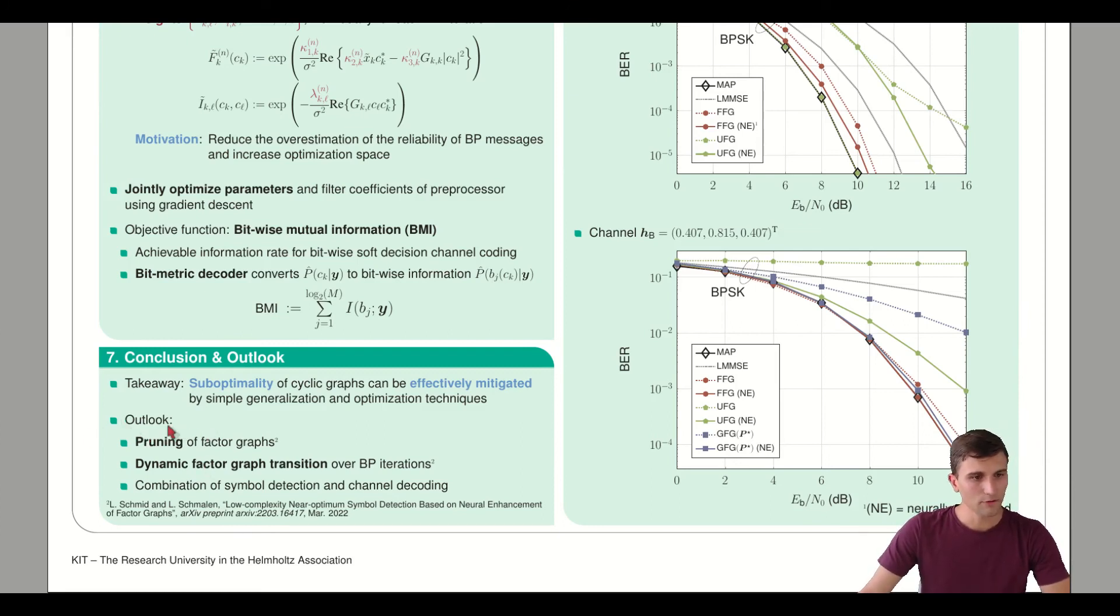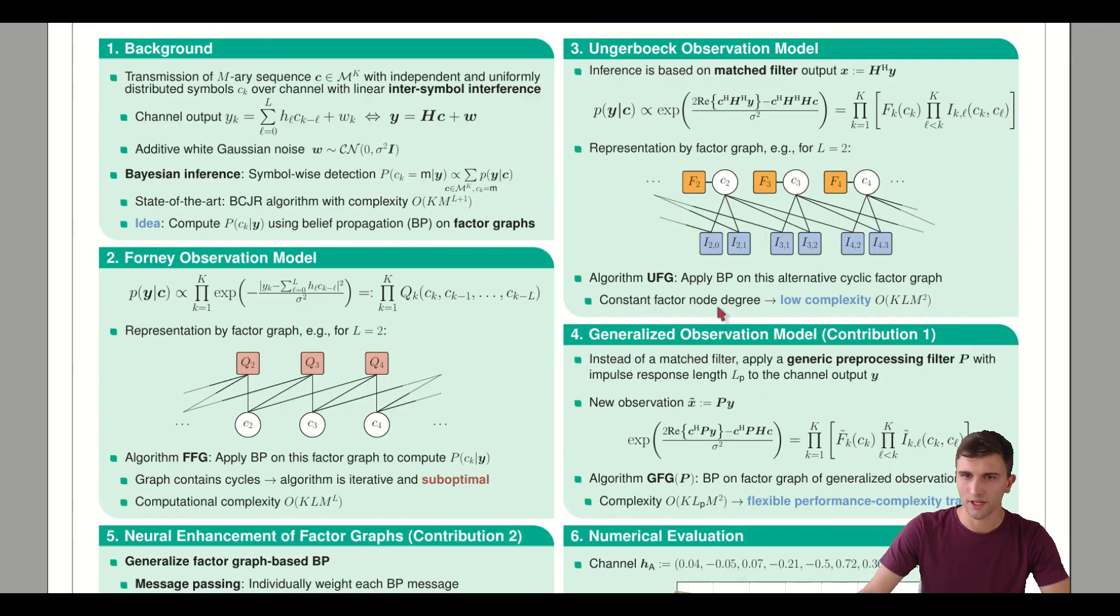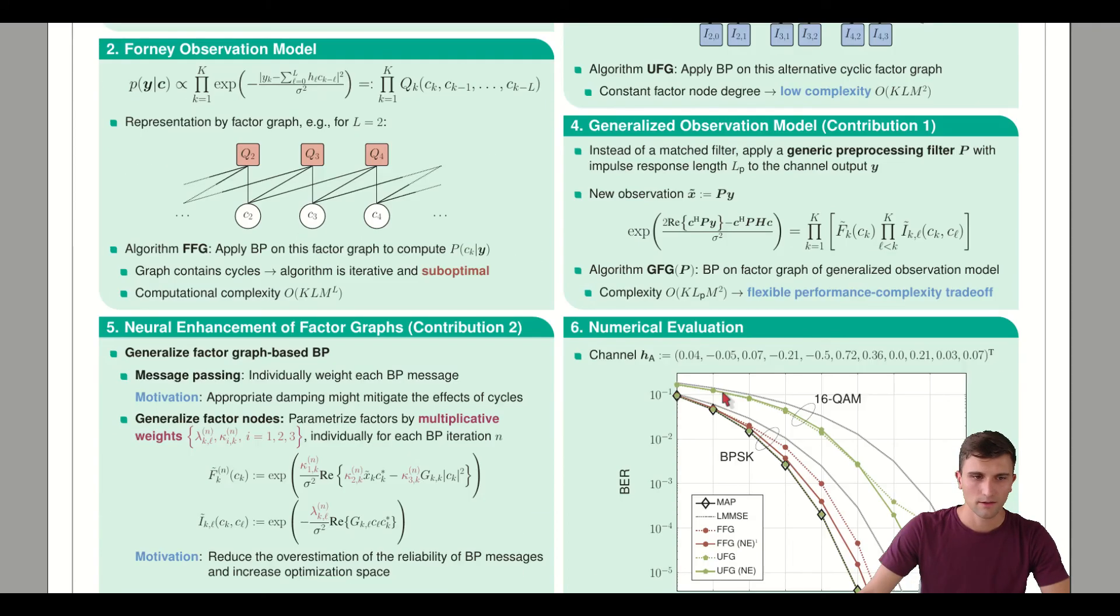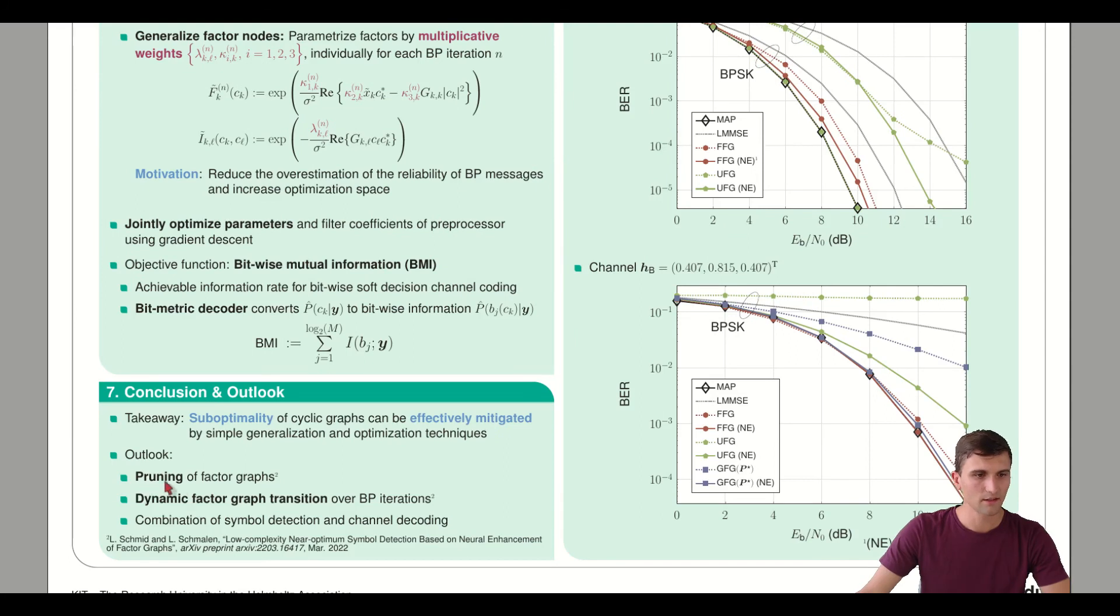To give an outlook, we already pre-printed a follow-up paper on arXiv. There we further investigated the Ungerberg model and the generalized observation model. We applied pruning techniques, cutting out edges of the graph to further reduce complexity, and got some quite interesting results.